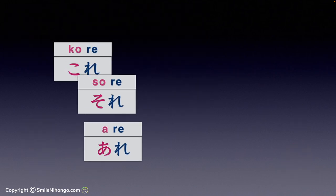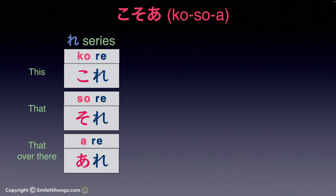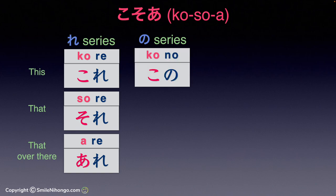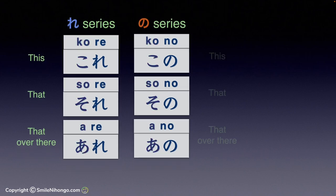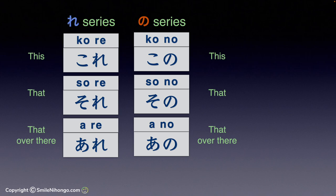So this is the first group of ko, so, a that you have learned. Now let's learn about another group: the no series. These three also mean this, that, and that over there. However, the usage is different from the re series — here's the difference between these two groups.